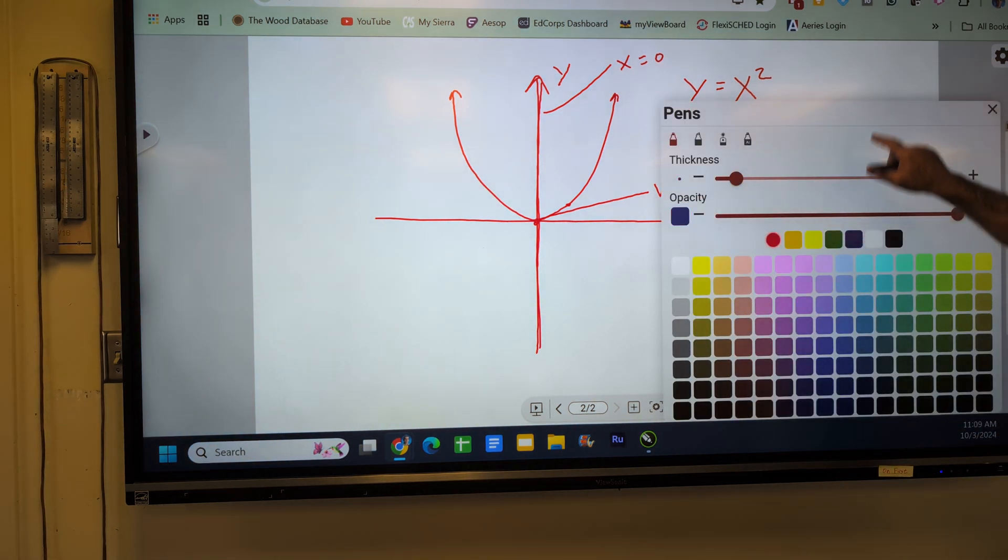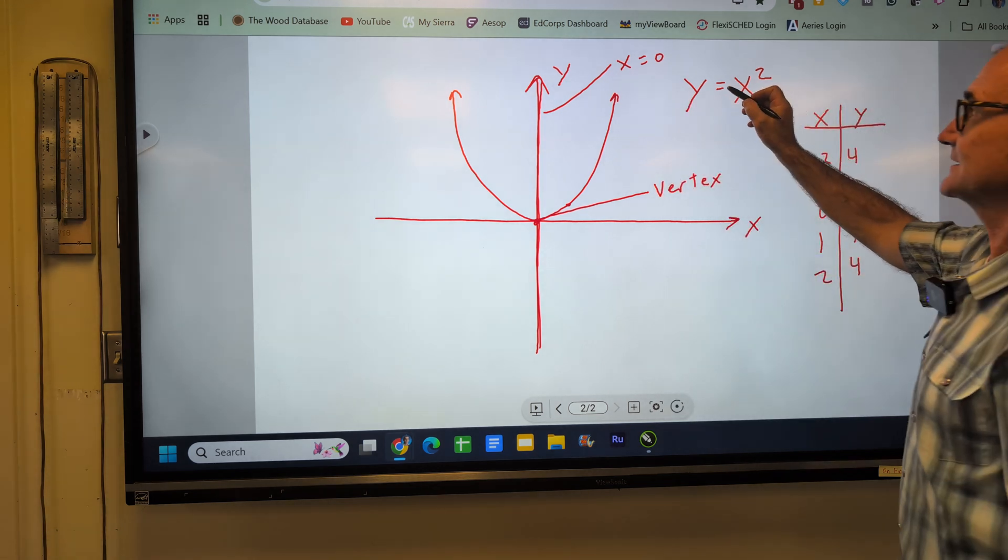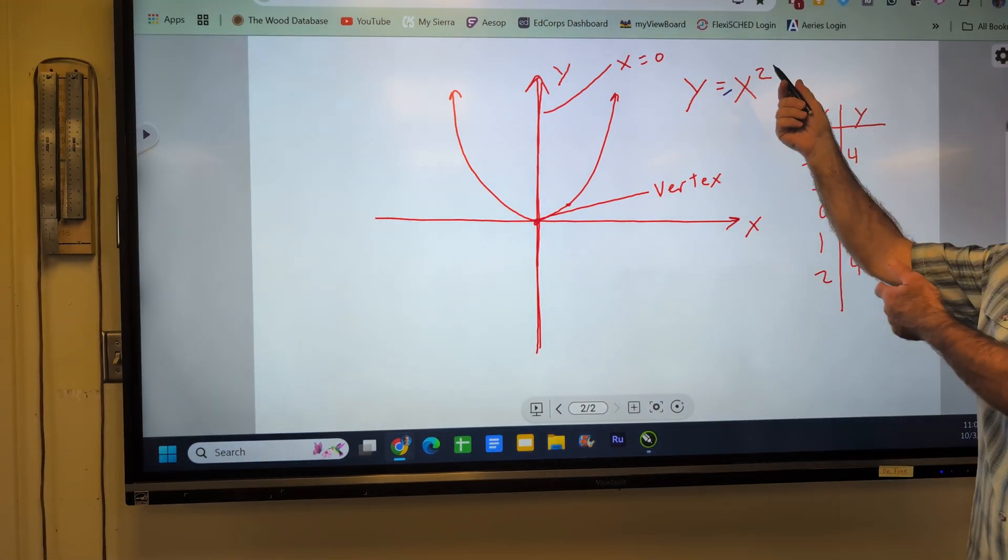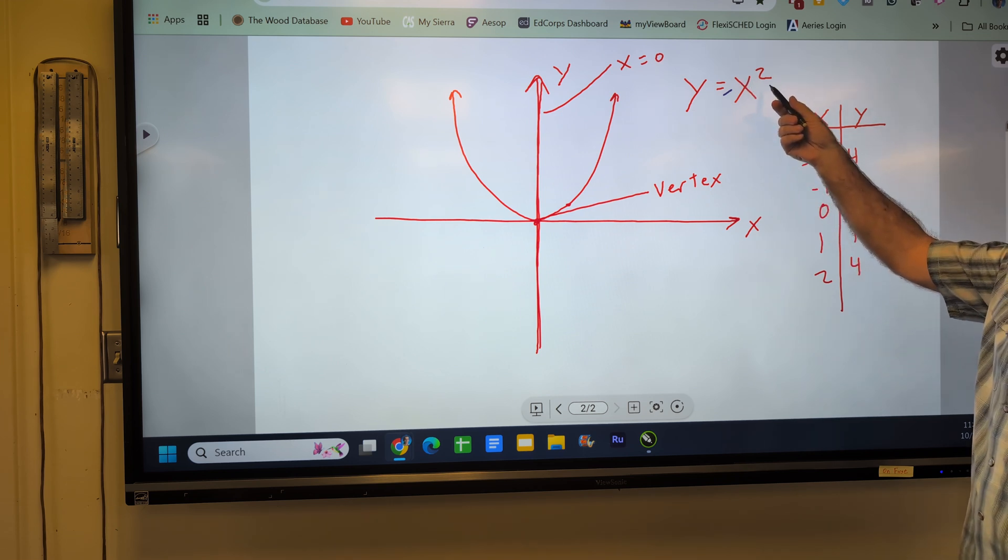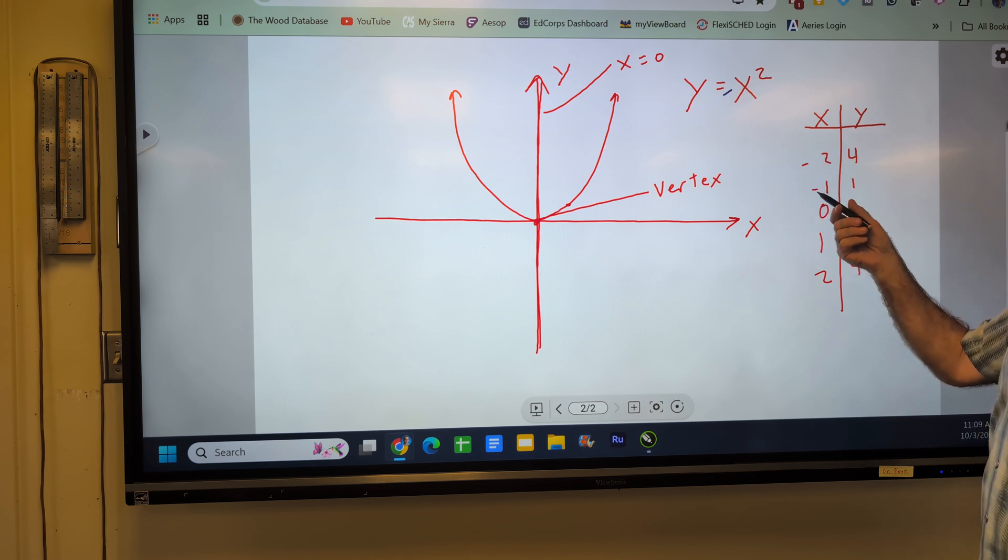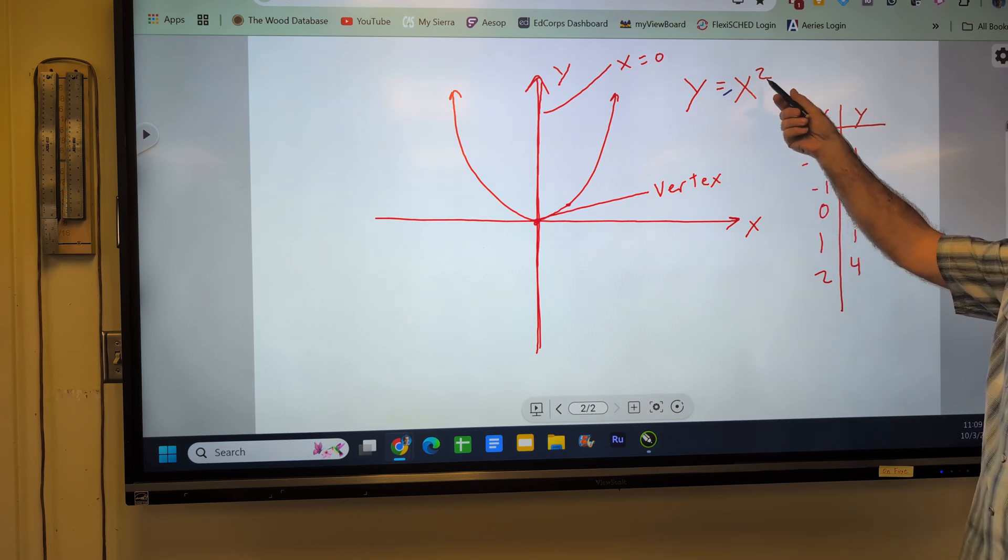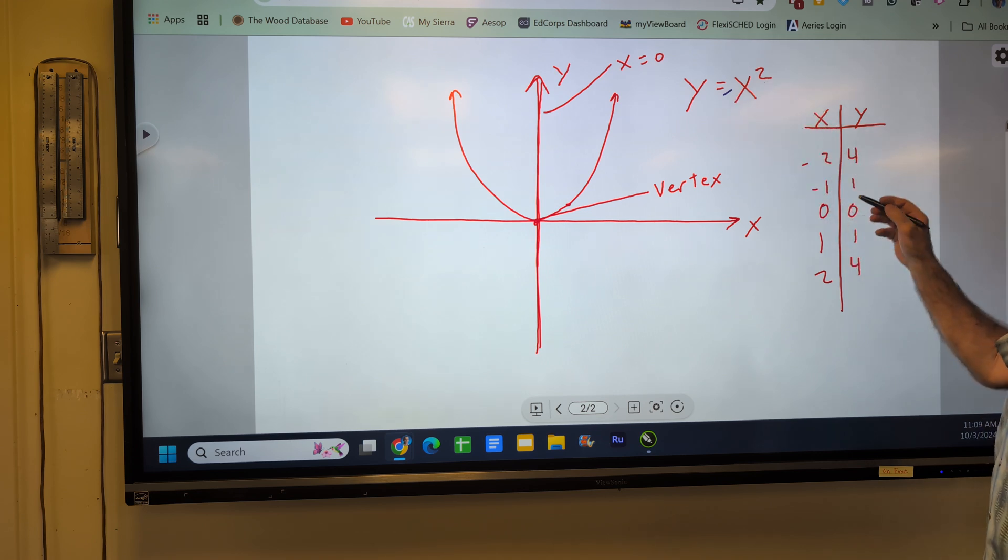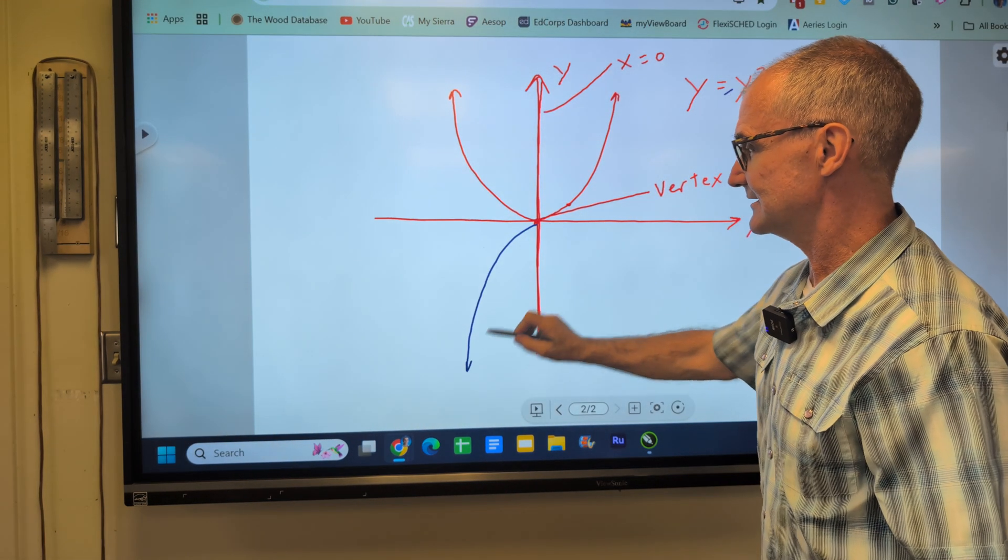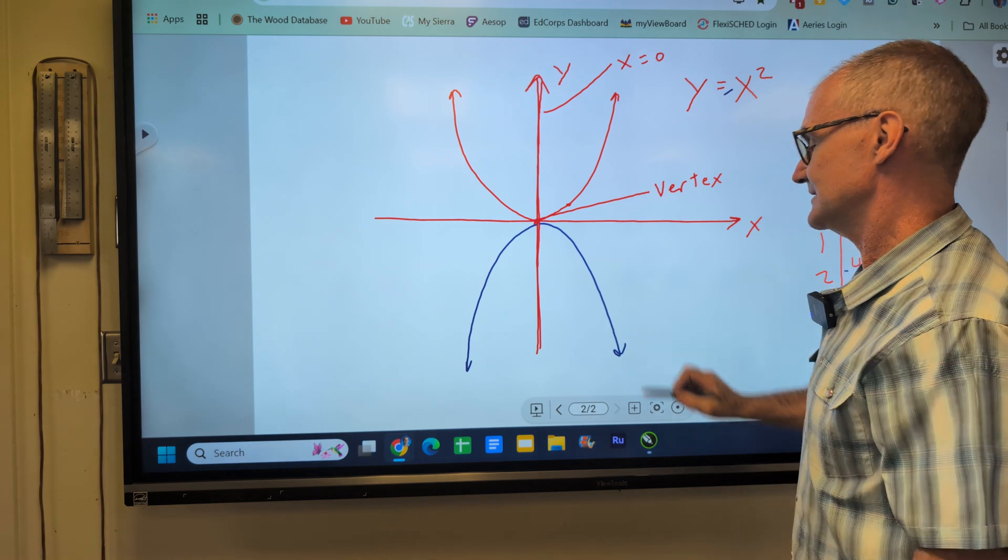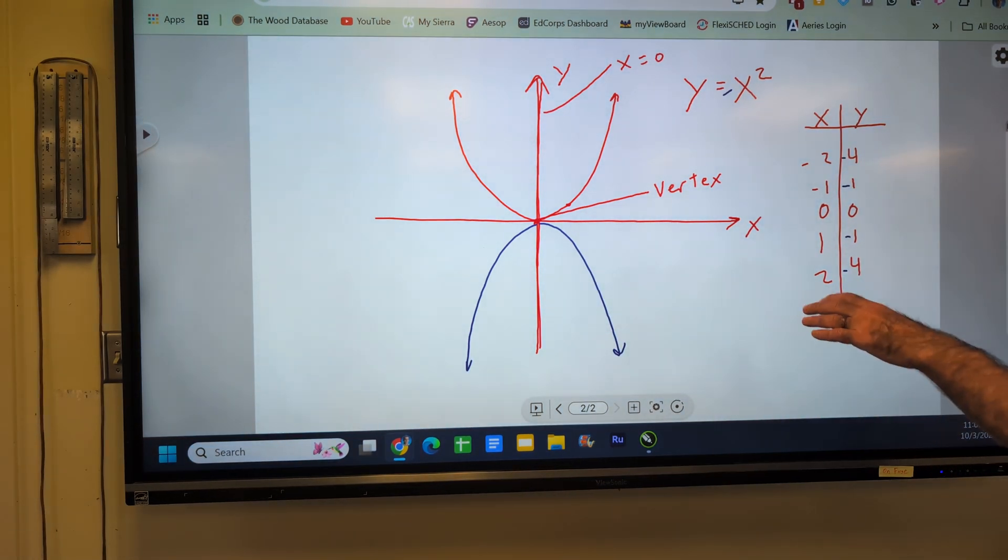If, on the other hand, I had the equation y equals negative x squared, order of operations is exponents before multiplication. So I'd still take those values, square them, and then multiply by negative one. If I were to do that, I'd take a zero, plug it in to be zero, take a negative one, square it one, times negative would make this negative and that negative. I would have the same parabola, but it would open downward.